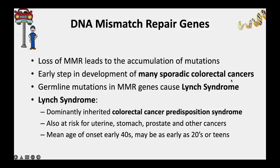Loss of mismatch repair is often an early step in the development of sporadic colon cancers. Germline or inherited mutations in one of these repair genes is associated with Lynch syndrome—a cancer predisposition syndrome mainly involving colon cancer. These individuals have a very high risk for developing colon cancer, as well as uterine, stomach, prostate, and other cancers. The mean age of onset is in the 40s, but individuals with Lynch syndrome can develop cancers as early as their 20s or even teens.